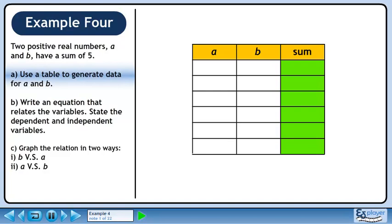Two positive real numbers, A and B, have a sum of 5. In part A, we'll use the table to generate data for A and B.